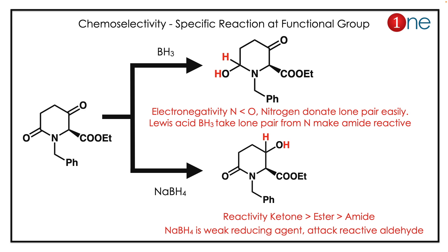If you look at sodium borohydride, it is a very weak reducing agent, so it will attack the most reactive functional group. Looking at reactivity: ketone is more reactive than ester, which is more reactive than amide. So the ketone reacts first, giving an alcohol. The concept outlined here is that you can achieve chemoselectivity by choosing the proper reagent.